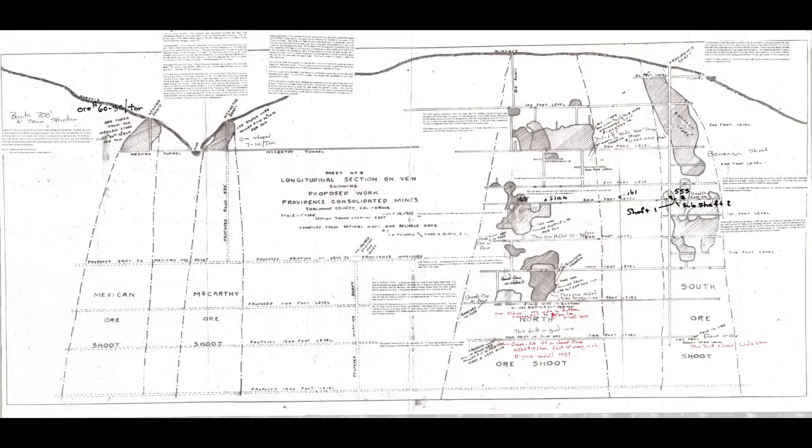The Providence mine plans and sections were destroyed in a fire many years ago. This surviving longitudinal cross-section looking east shows the two principal ore shoots on the Providence vein system and the main areas of production mining. To the left, the zone connects northward to the McCarthy and Mexican zones.